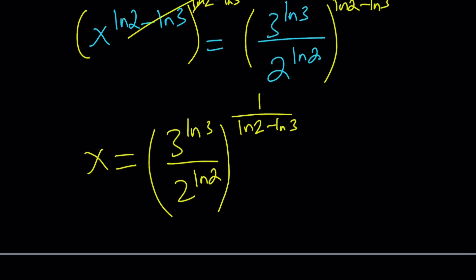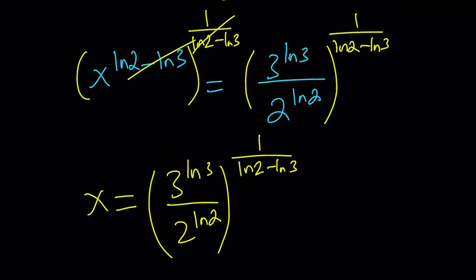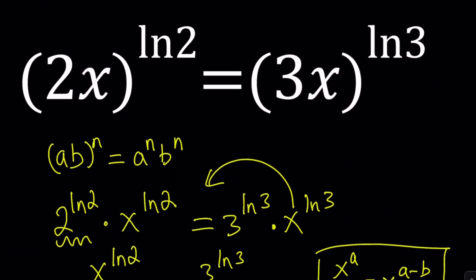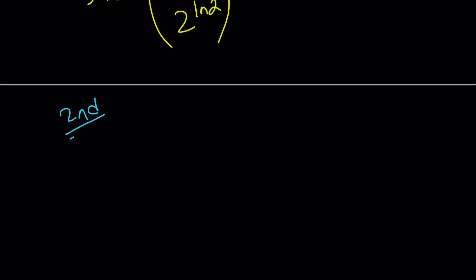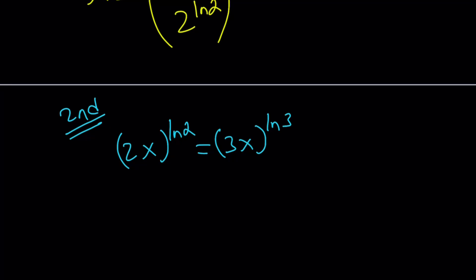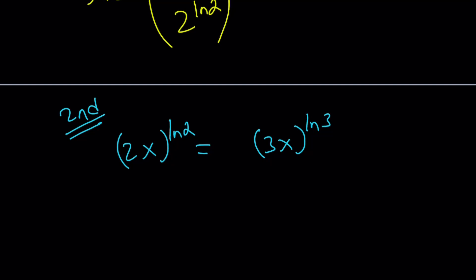We can check the numerical value and see what that looks like, and also compare with Wolfram Alpha. Then we're going to look at a graph, which will confirm our finding. Let's also talk about an alternative method — is there another way to do this problem? Absolutely. You can take the natural log of both sides. Let's briefly talk about that.